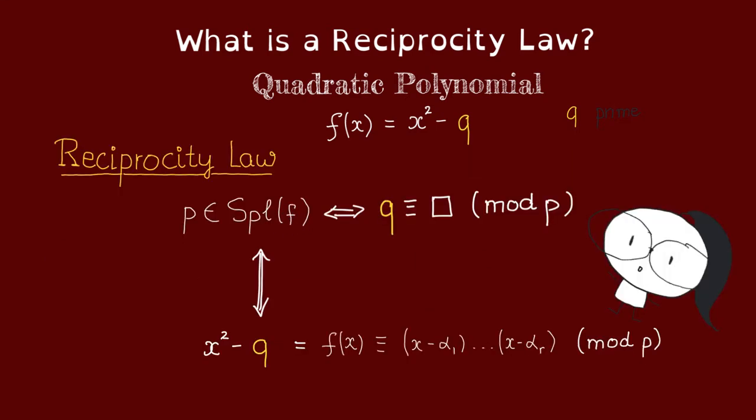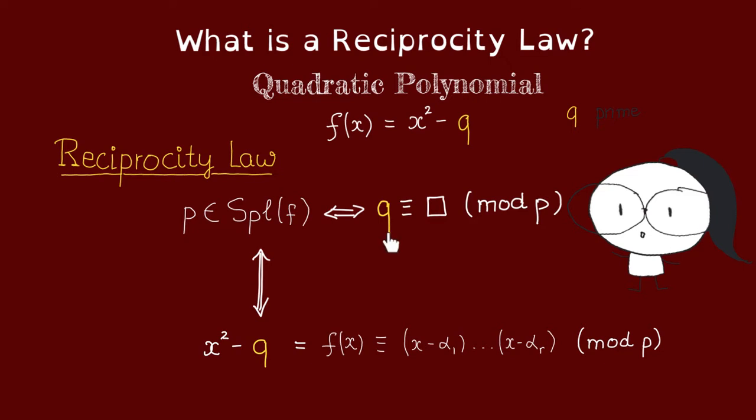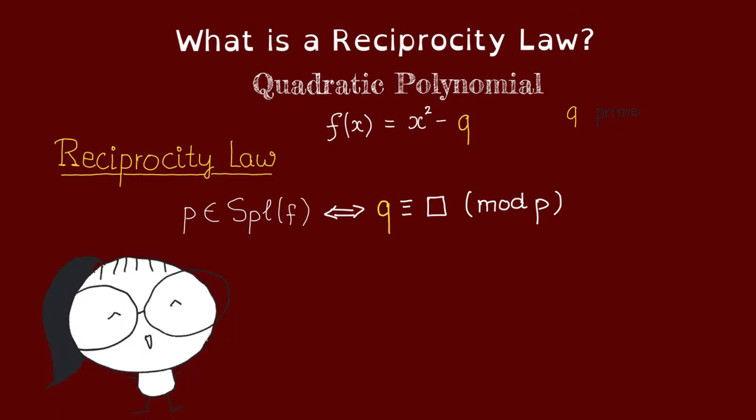This means in particular that f splits over p if and only if q is congruent to a square mod p, so that this has a solution. Great, so we have a reciprocity law.